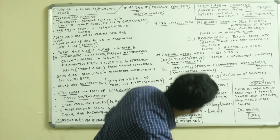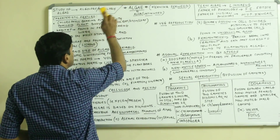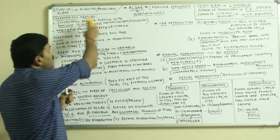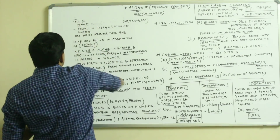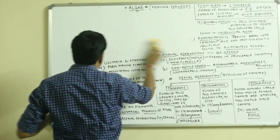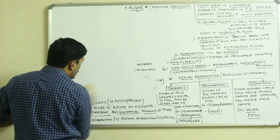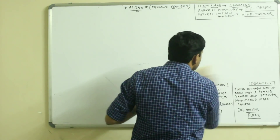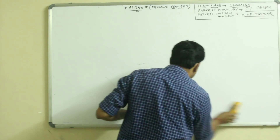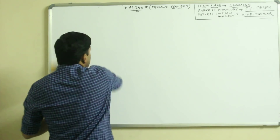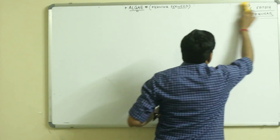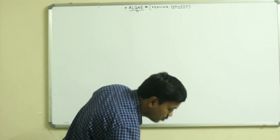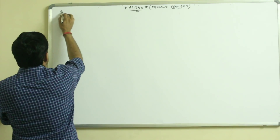Now we must also know about what type of sex organs are found in algae. The male sex organ is called as the antheridium and the female sex organ is called as the oogonium.